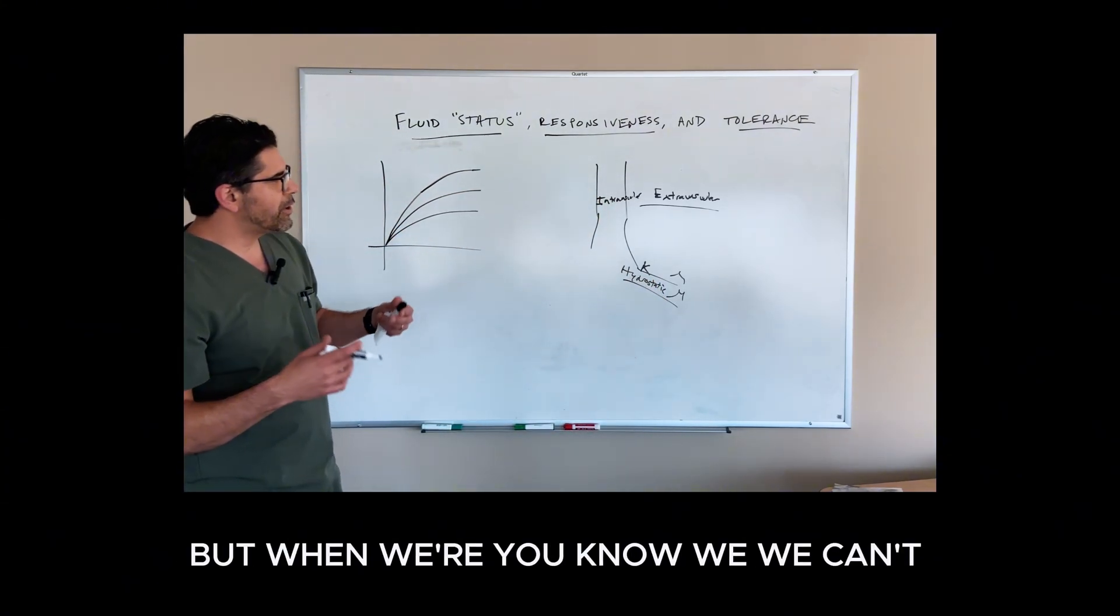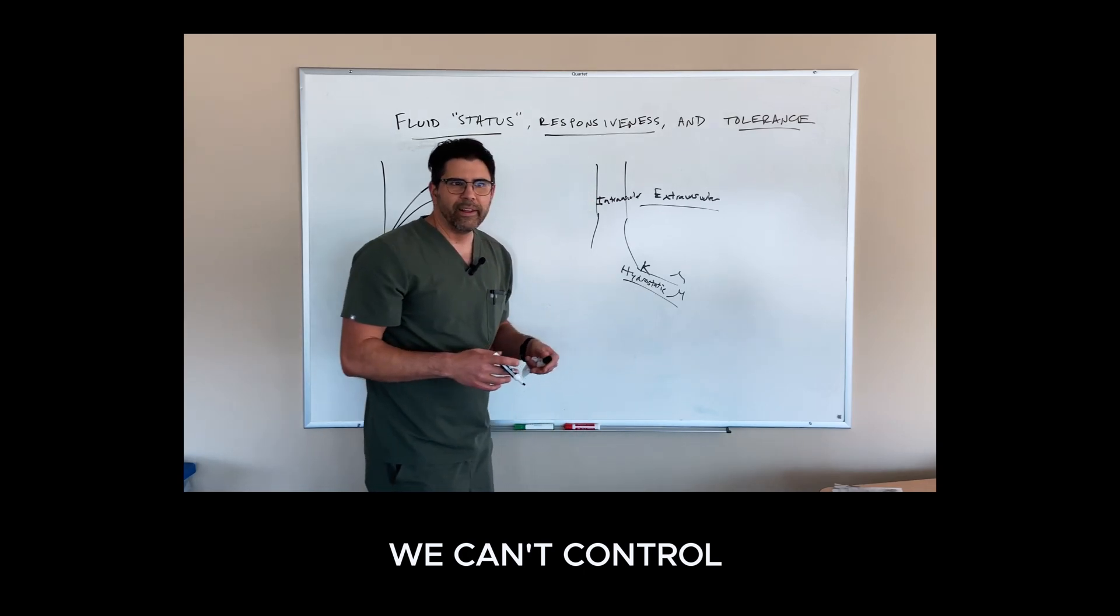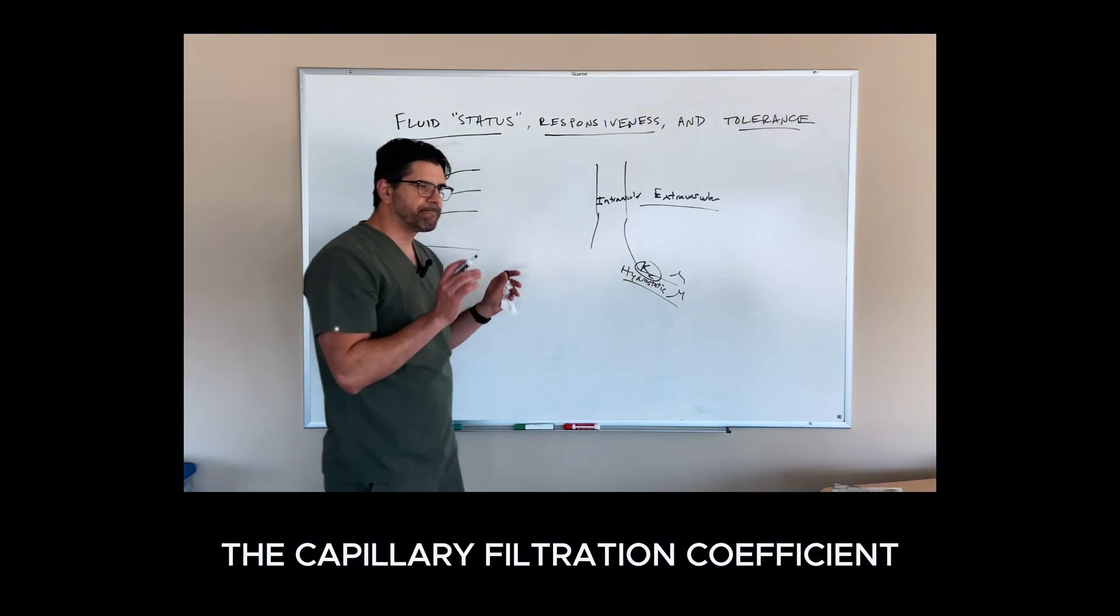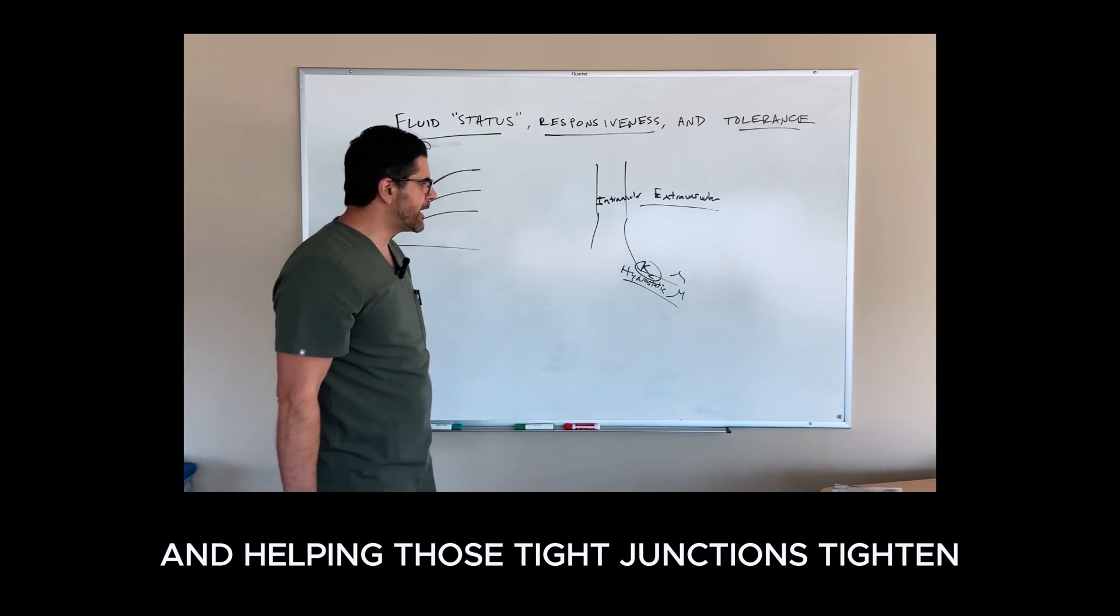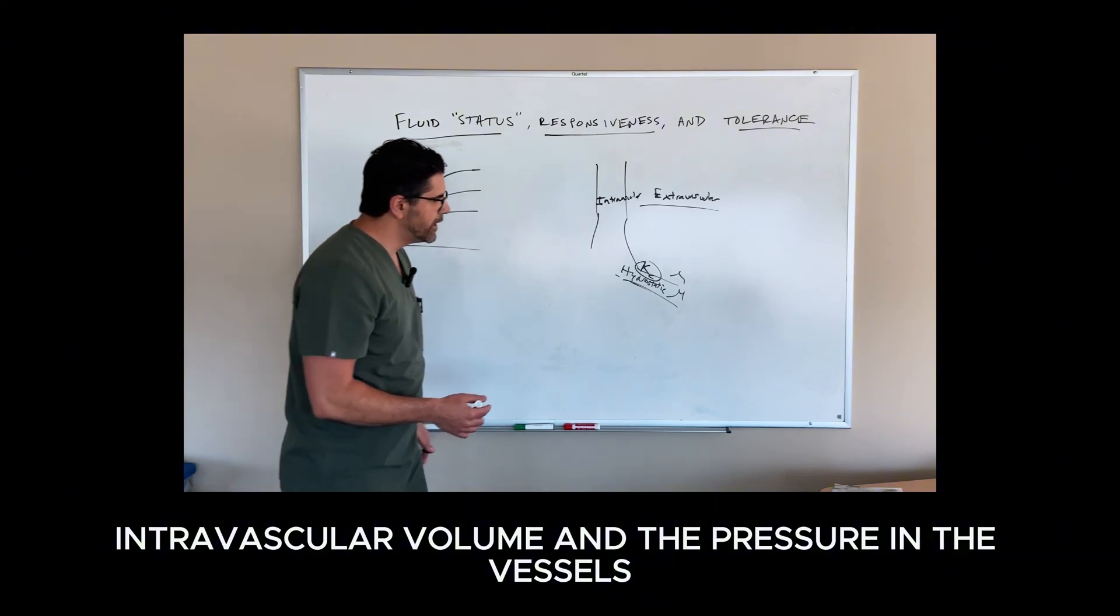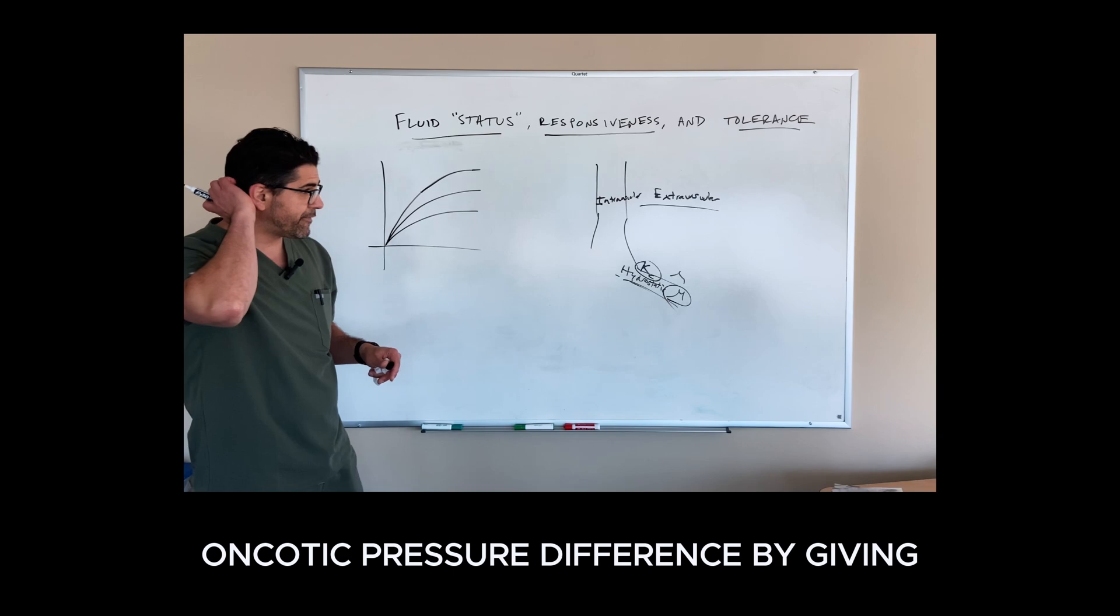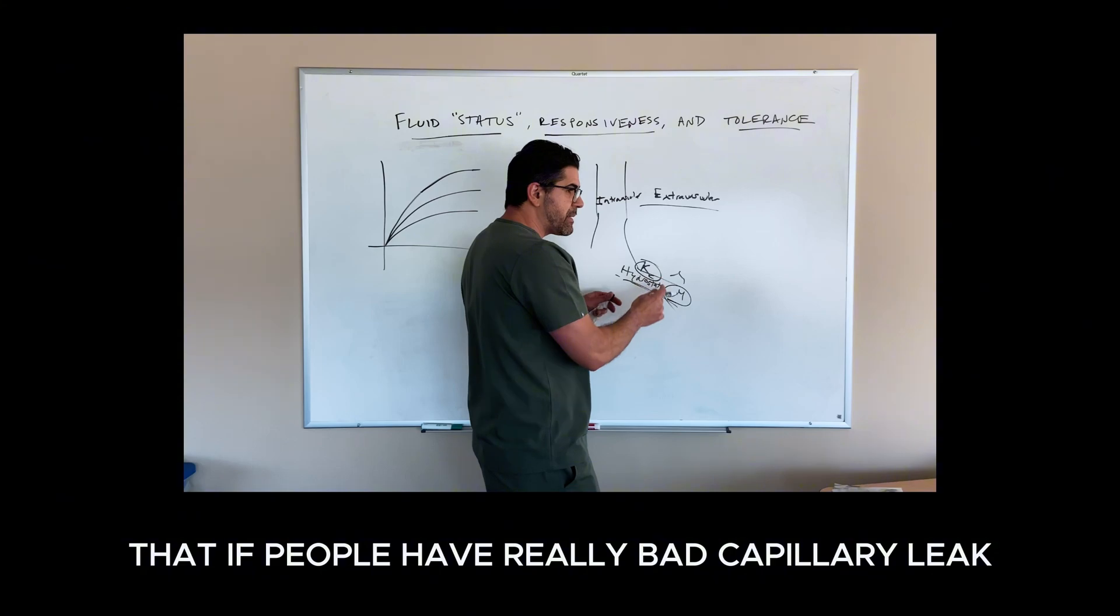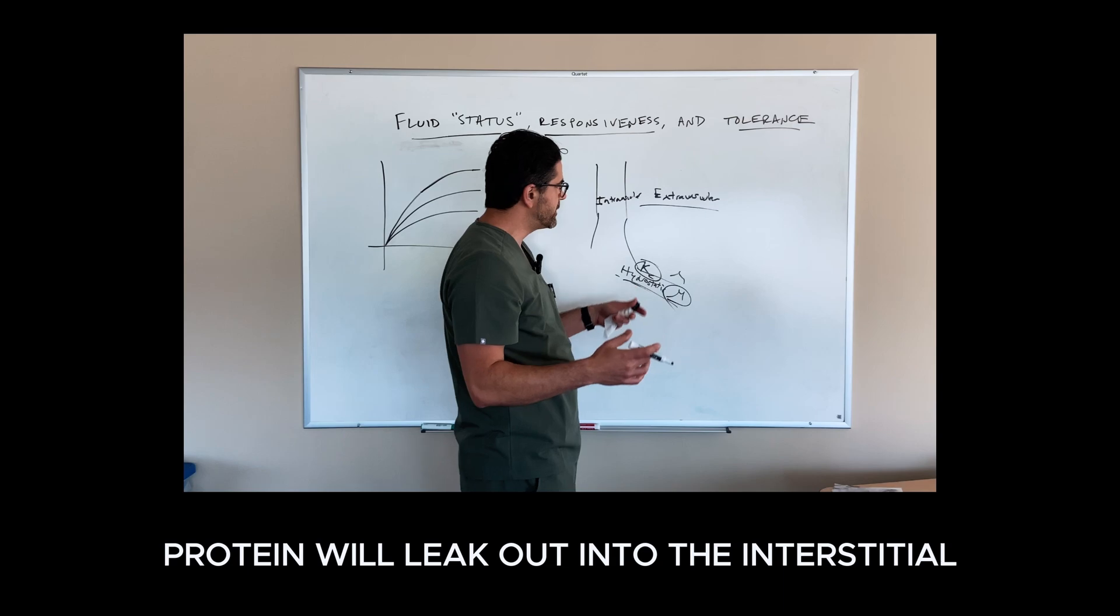Remember that blood vessels are also end organs and the integrity of the blood vessels, the integrity of these tight junctions, breaks down over time. We can't control very largely the capillary filtration coefficient, though there may be some effects of norepinephrine helping those tight junctions tighten. We can definitely manipulate the hydrostatic or intravascular volume and pressure in the vessels. We can, to some degree, manipulate the oncotic pressure difference by giving intravenous albumin. However, recognizing that if people have really bad capillary leak, some of that protein will leak out into the interstitial.